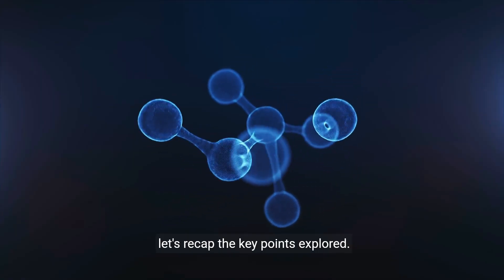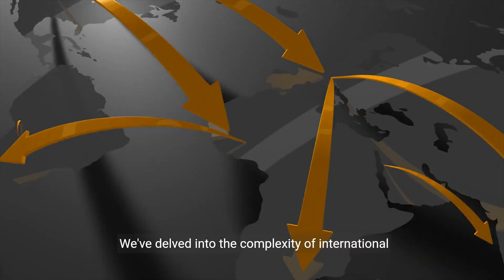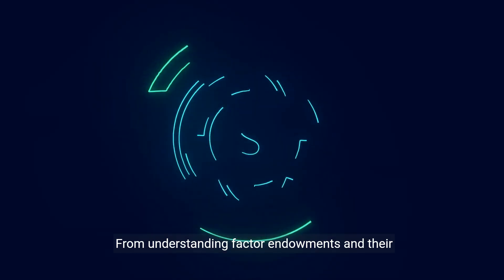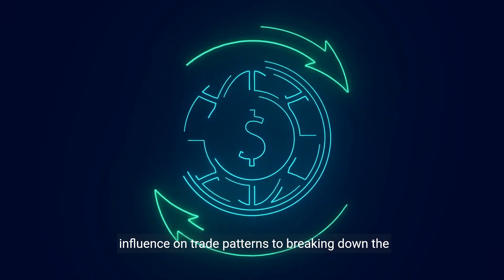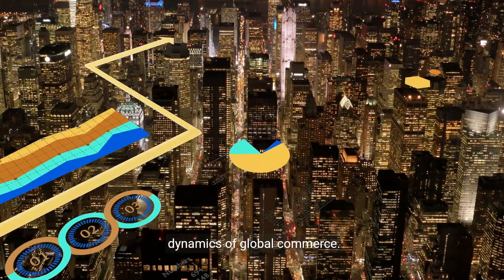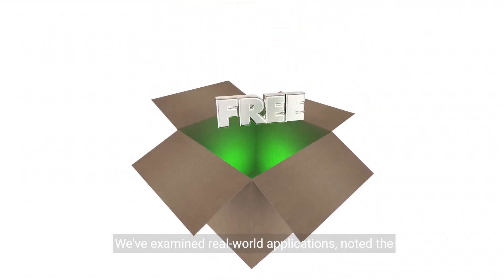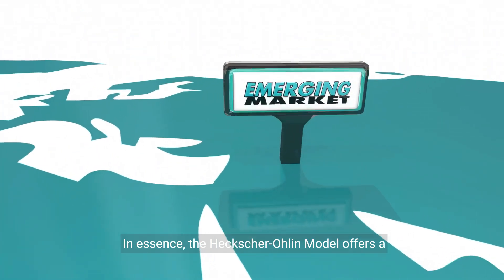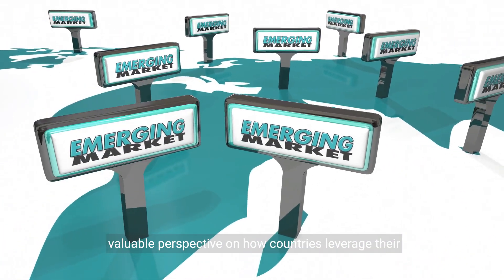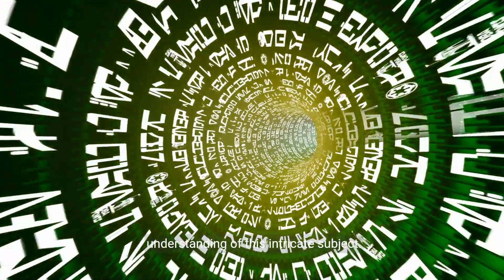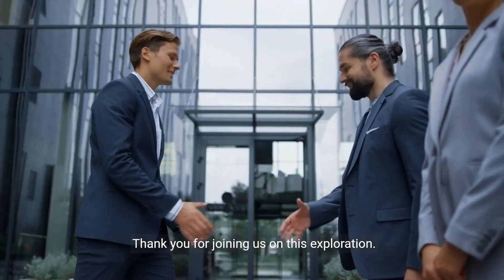As we reach the end of our journey through the Heckscher-Ohlin model, let's recap the key points explored. We've delved into the complexity of international trade and identified the need for a robust model to understand it. From understanding factor endowments and their influence on trade patterns to breaking down the Heckscher-Ohlin model step by step, we've seen how this framework elucidates the dynamics of global commerce. We've examined real-world applications, noted the benefits, and contemplated the criticisms and limitations of the model. In essence, the Heckscher-Ohlin model offers a valuable perspective on how countries leverage their resources to engage in trade, providing a foundational framework that enhances our understanding of this intricate subject.